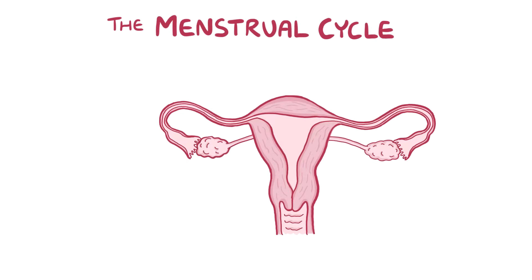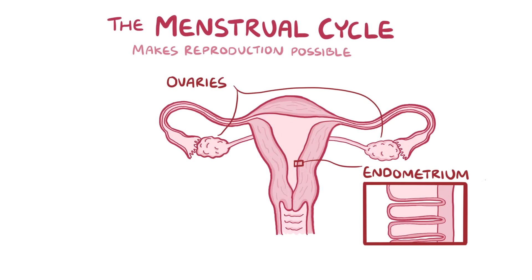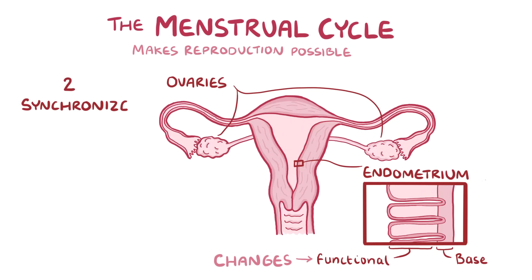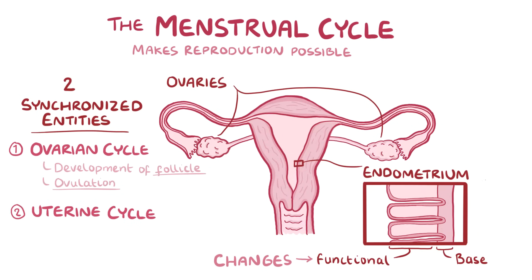The menstrual cycle refers to the regular changes in the activity of the ovaries and the endometrium that make reproduction possible. The endometrium is the layer of tissue lining the inside of the uterus. This lining consists of a functional layer, which is shed during menstruation, and a thin basal layer, which feeds the overlying functional layer. The menstrual cycle consists of two interconnected and synchronized processes: the ovarian cycle, which centers on the development of the ovarian follicles and ovulation, and the uterine or endometrial cycle, which centers on how the functional endometrium thickens and sheds in response to ovarian activity.